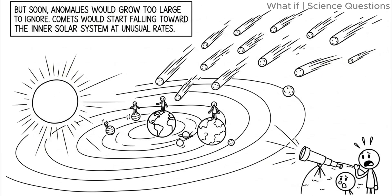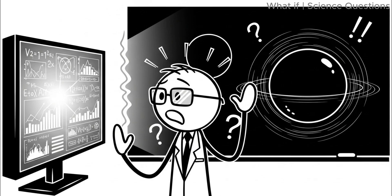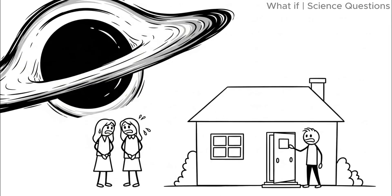Comets would start falling toward the inner solar system at unusual rates. Space probes like Voyager 1 might suddenly veer off course. Using this data, scientists would realize the terrifying truth. Something massive, invisible, with no light, no heat, no reflection, was approaching. The only candidate? A black hole. And by the time we'd confirmed it, the black hole could already be less than a light year away, practically at our doorstep, on a cosmic scale.